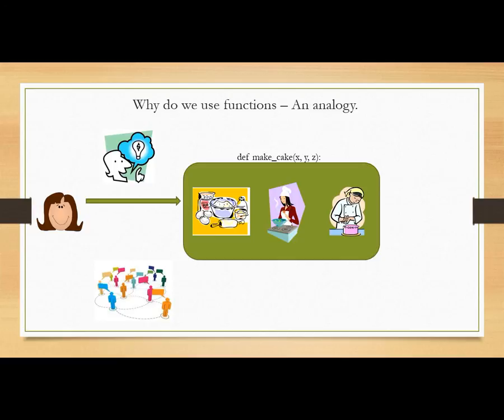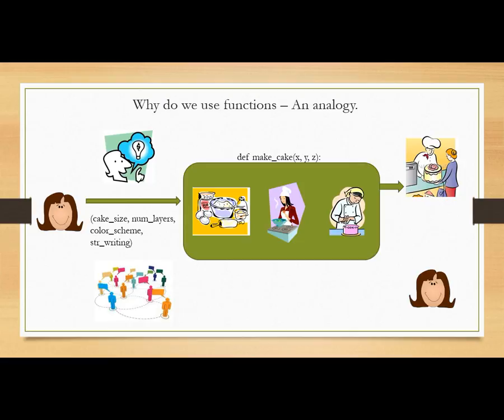And when she calls this magic box, she could change a few parameters. You know, things like the size of the cake, the number of layers on the cake, the color scheme she wants to put for the cake, the words that the customer wants put on top of the cake. Those things could differ. But her core processes have already been defined in this box, and those won't change. And the customer will always get the same consistent results, and they will be happy, and Anna will be happy.